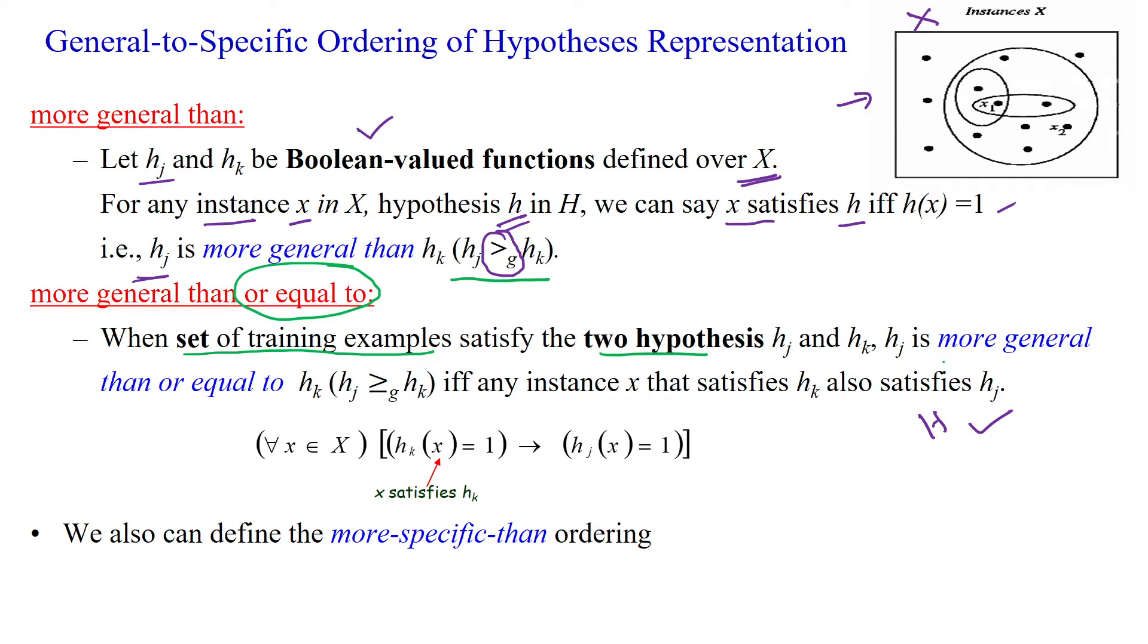Then h_j is more general than or equal to h_k if and only if any instance x that satisfies h_k. That means, suppose you have one more hypothesis h3.